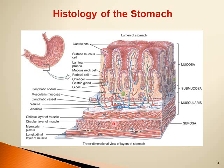The muscularis in the stomach is composed of three layers: an additional inner oblique layer, then the circular layer, and then the longitudinal muscle layer separated from the circular layer by the myenteric plexus.